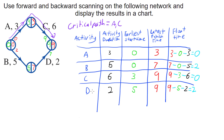Note that this doesn't mean I can delay both B and D by two minutes each — if I delayed both, I'd run late. That two minutes is shared across that path. To summarize: forward scanning gives you the earliest start times; backward scanning gives you the latest finish times; from those you calculate the float times. The path with no float is your critical path, which in this case runs through A and C.